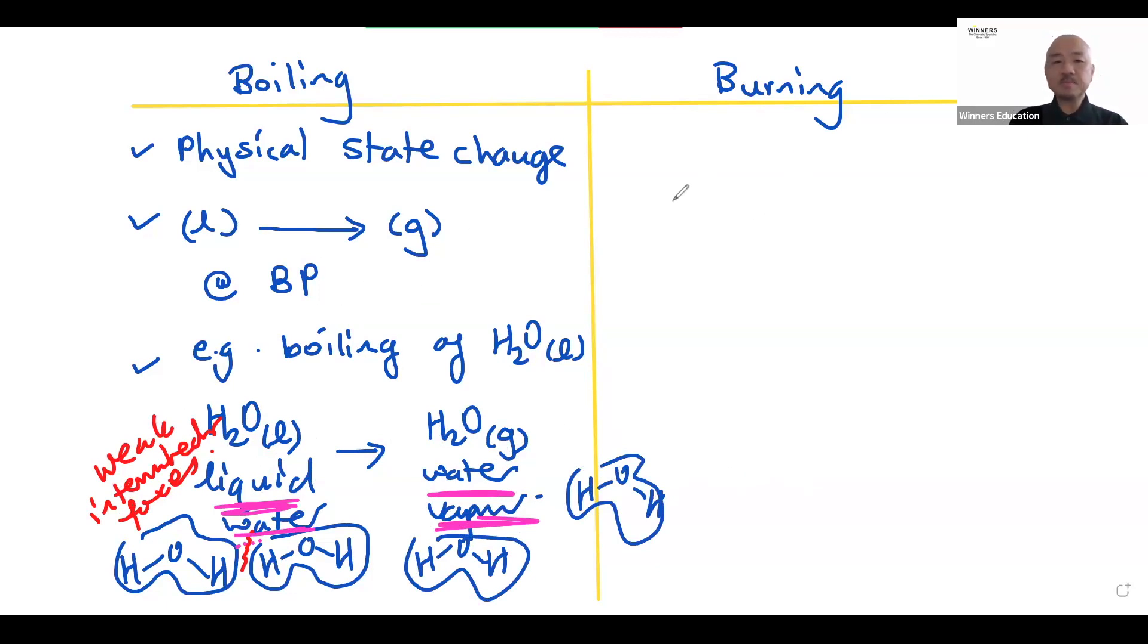What about burning? Now burning is not a physical state change. Burning is a chemical reaction whereby it involves the reaction with oxygen gas. And commonly we like to say burning is combusting or combustion. Let me give you an example. Let's say hydrogen gas is burnt or combusted. What happens?